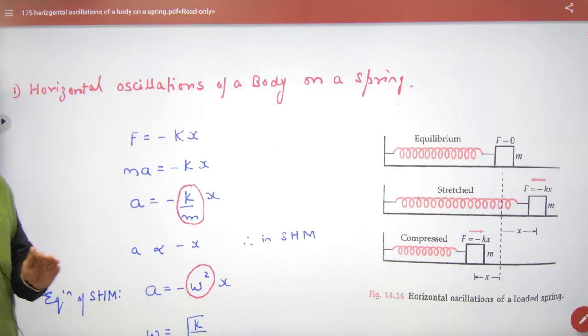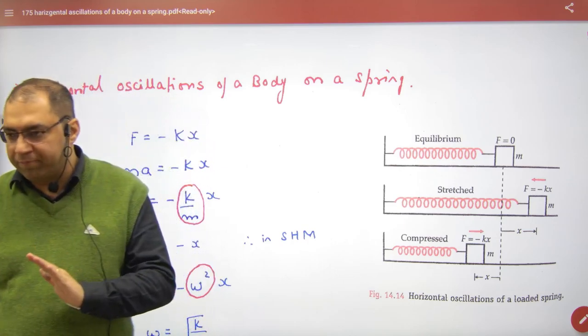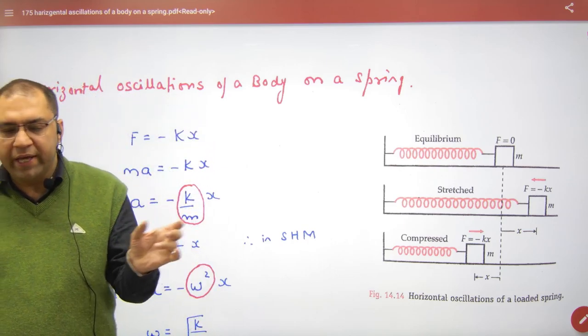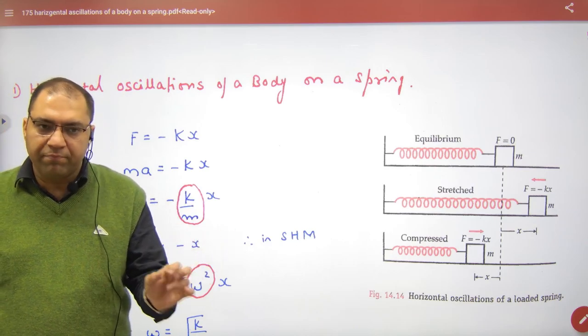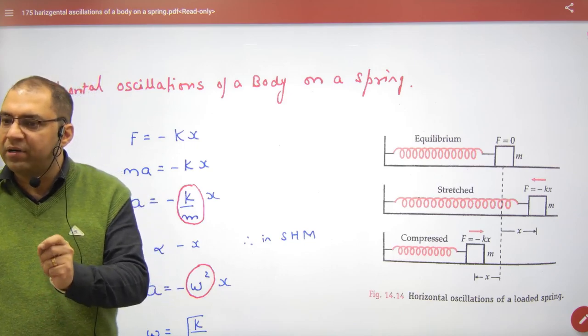So the first example is the horizontal oscillation of a body on a spring. It is simple. It says take a spring, take a mass. When you move this mass, prove it in SHM and find the time period T.